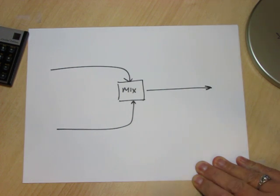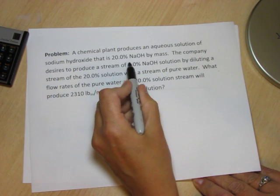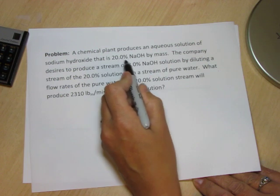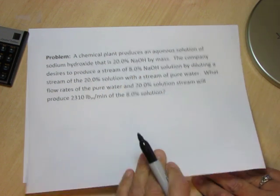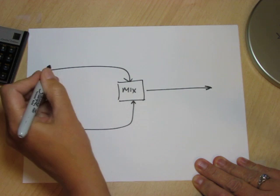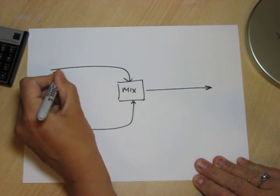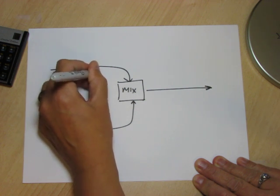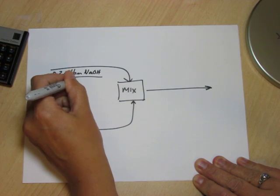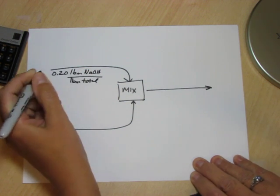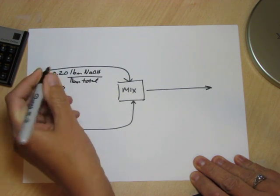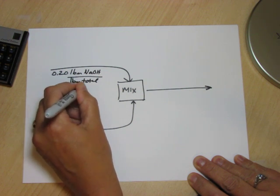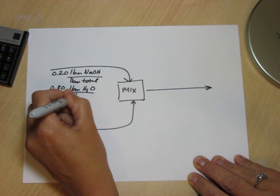The two streams that we're going to mix are 20% sodium hydroxide aqueous which means the balance is 80% water by mass. So I'm going to label this to say that there is 0.2 lb NaOH per lb total in this stream, and 0.80, immediately using the fact that the mass fractions must add to one, lb water per lb total.